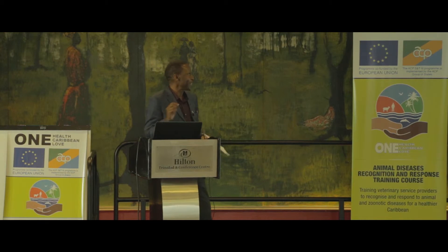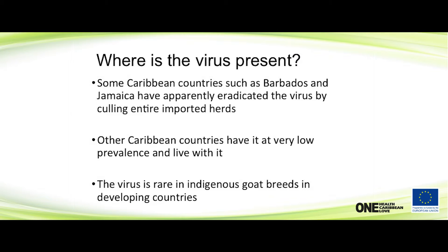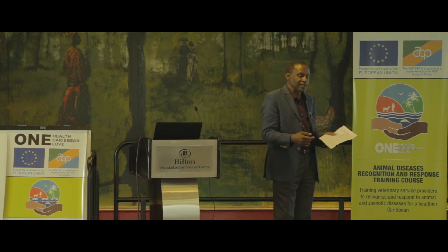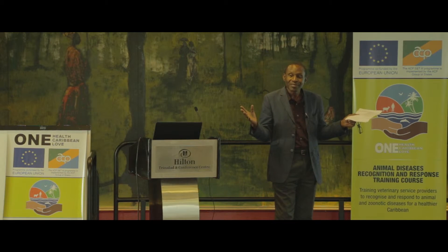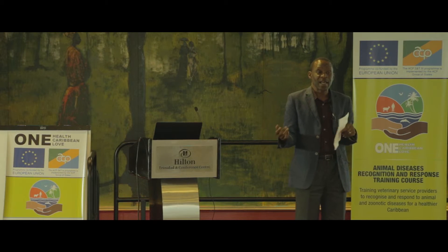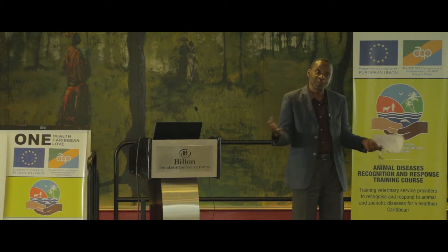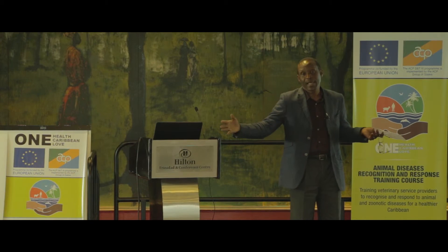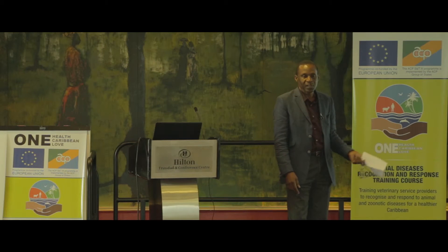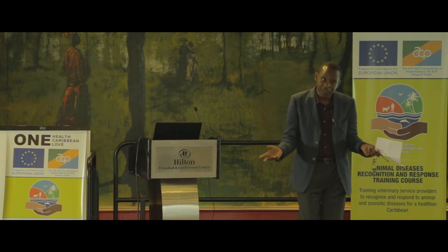That's why Caribbean countries are aware of the disease — because we import. Some Caribbean countries such as Jamaica and Barbados have apparently eradicated the virus over the past 10 to 15 years by culling entire imported herds. In Jamaica in the early 1980s, imported herds of a couple hundred dairy animals came in. American vets who had seen CAE in the United States diagnosed it, but the animals weren't immediately slaughtered because they were high-value imported dairy animals. They were kept in quarantine for eight or nine years. When I came from university I had to work with this herd for my master's, and we just couldn't get rid of it — eventually they slaughtered the entire herd. Barbados had a similar situation in the 90s.